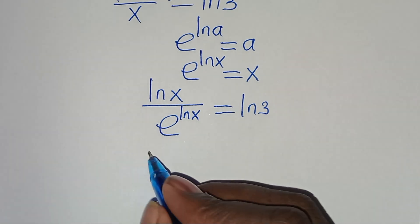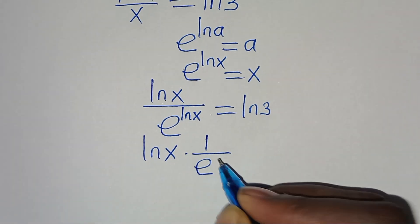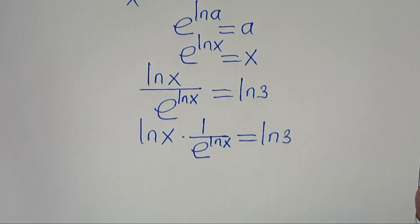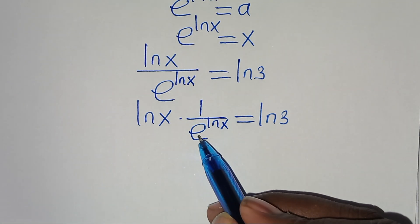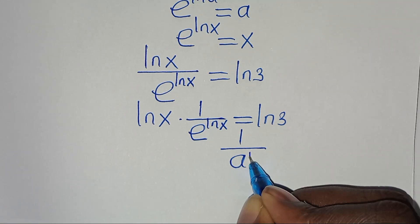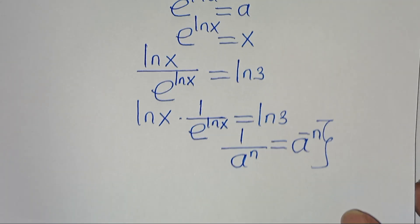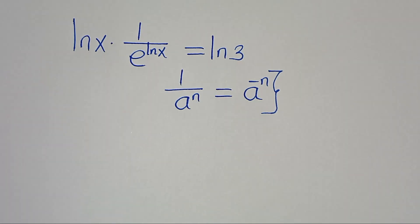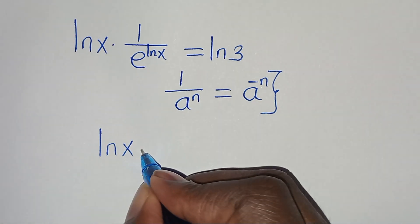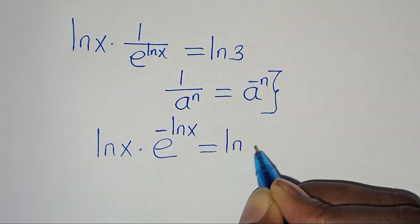This means we have ln(x) multiplied by 1 over e to the power of ln(x), equal to ln(3). Now, 1 over a to the power of n can be expressed as a to the power of minus n. Applying this exponent property, we have ln(x) multiplied by e to the power of minus ln(x), equal to ln(3).